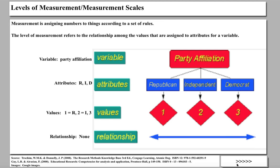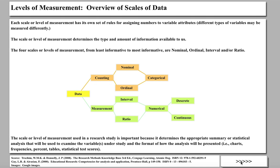Here is an overview of scales of measurement. The scales of measurement are: a nominal scale, an ordinal scale, an interval scale, and a ratio scale. Each scale or level of measurement has its own set of rules for assigning numbers to variable attributes, so different types of variables may be measured differently. The scale or level of measurement determines the type and amount of information available to us — nominal, ordinal, interval, and ratio each determine the type of information available.